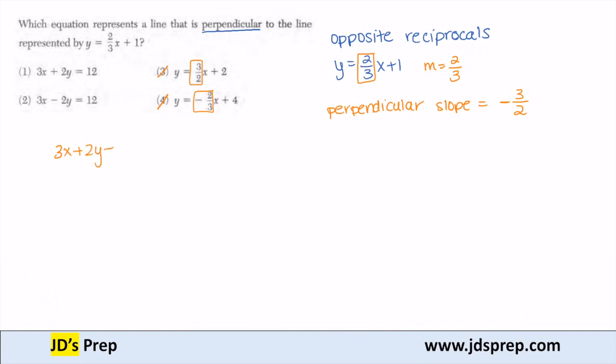3x plus 2y equals 12. I'm going to get that in slope intercept form. So I'm going to subtract the 3x to the other side, which gives me negative 3x plus 12. And then I'm going to divide that 2 everywhere.